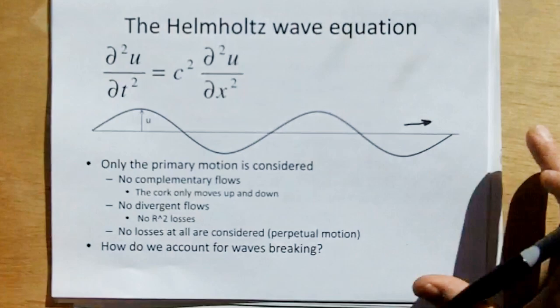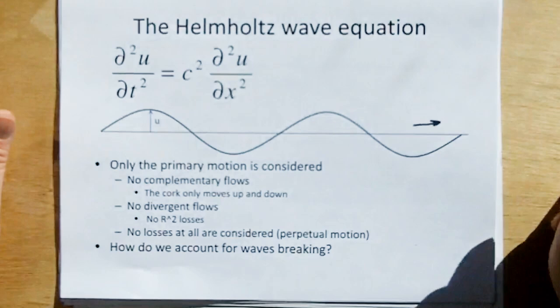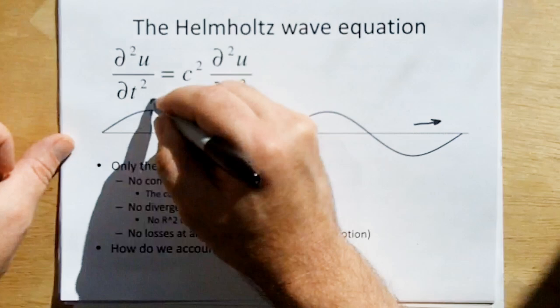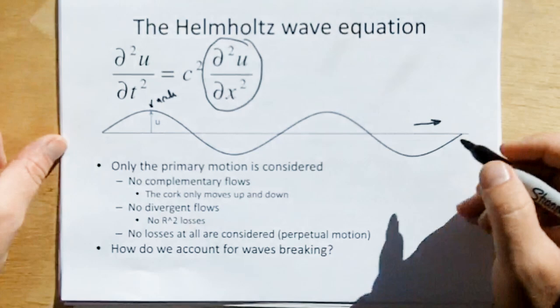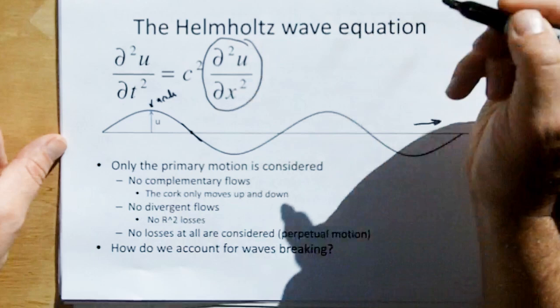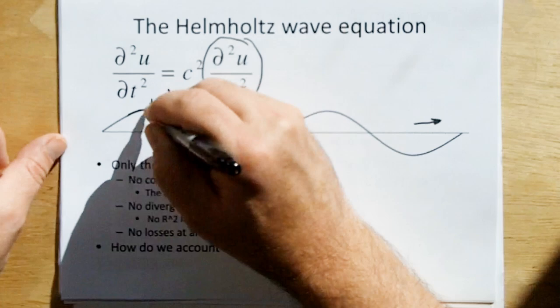And u is the amplitude of the wave off of the mean sea level. So, d²u/dt² is the acceleration, the acceleration of a particle on the surface of the water. And this d²u/dx² is the curvature of the water. Here, where the curvature is flat, there is no acceleration of the water. Here, where the curvature is the max, you have acceleration of the water downward.